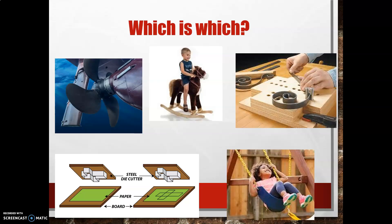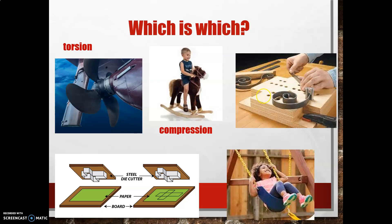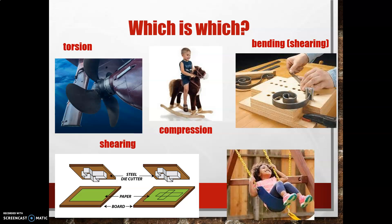Now it's your turn to work out which of the forces apply to each of these pictures. Pause the video and we'll go through the answers in a minute. A boat propeller — that's torsional stress. A child on a rocking horse — a lot of force going through the legs, so that's compressive force. Someone bending metal — that's bending, which is categorised as a shearing force. A die cutter cutting past two surfaces — that's shear. And a young lady on a swing — there's tension in the chains and a bending force in the seat.